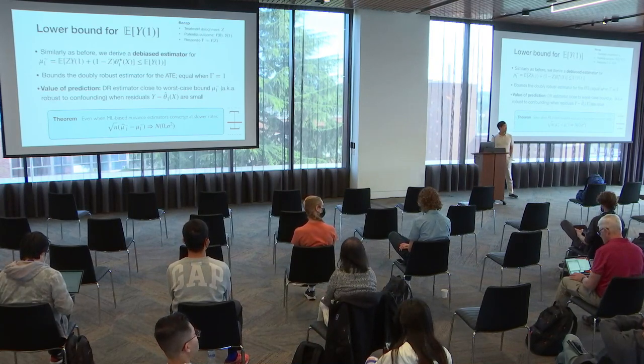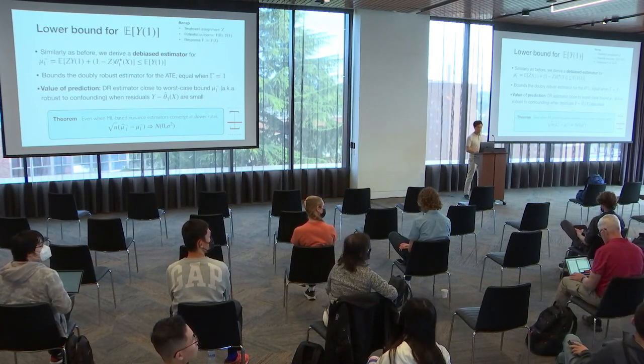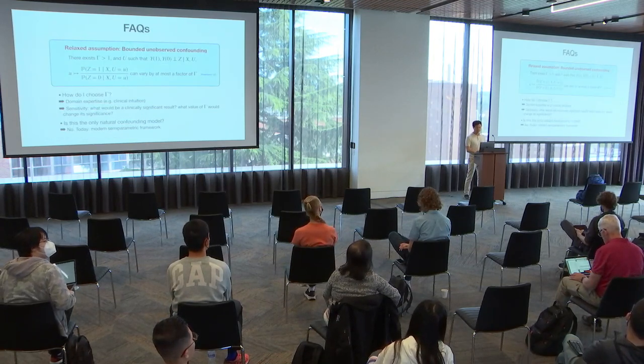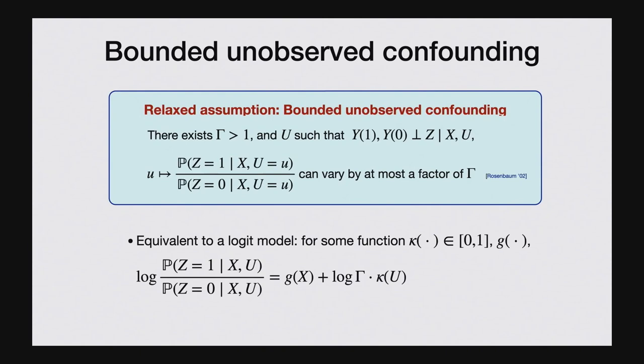On how gamma provides information about the unobserved potential outcome: gamma modulates the extent to which the odds ratio varies. Odds ratios are a standard quantity in logistic regression, and I'm saying this odds ratio can't vary too much as a function of the unobserved confounder. This is actually a 20-year-old model of unobserved confounding due to Paul Rosenbaum, and because biostatisticians are familiar with odds ratios, it's a fairly natural thing to posit in that community.